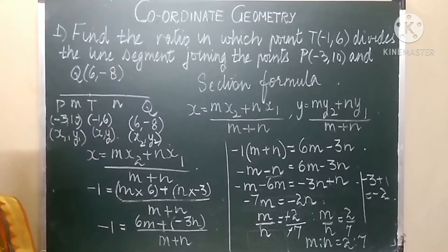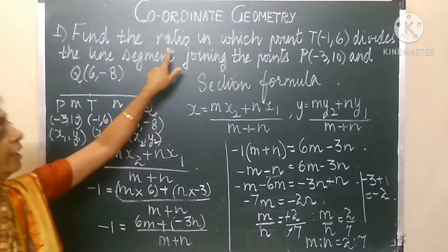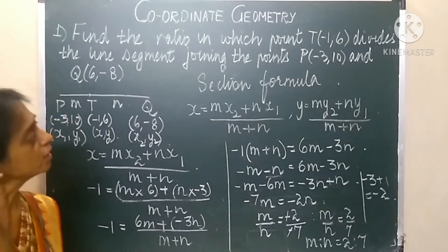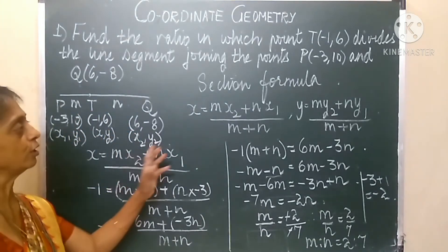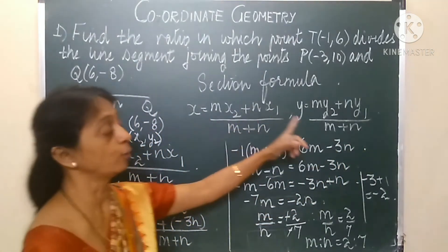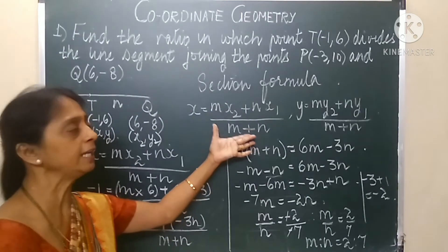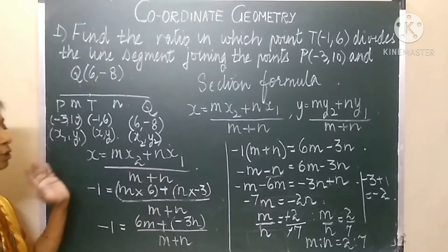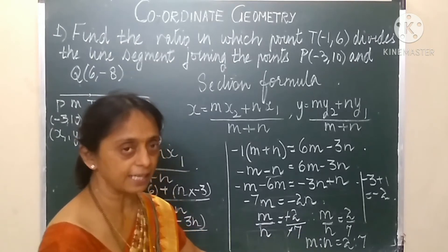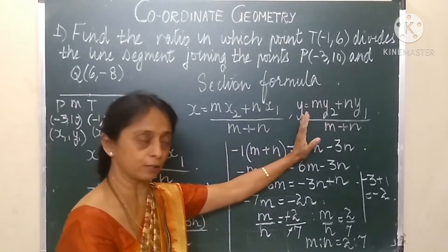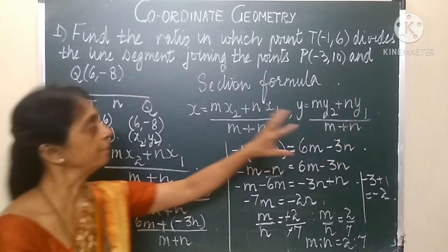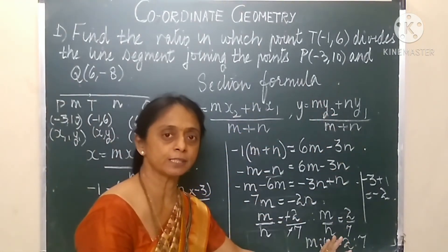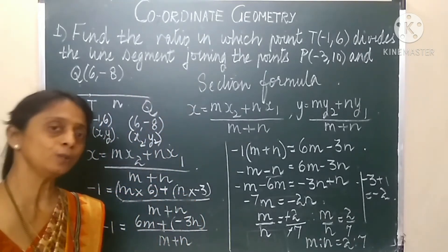So this is what they had asked us to calculate — find the ratio, which is given as m is to n. We have calculated and reached the answer, which is equal to 2 is to 7. We saw that we used the section formula, but we only needed to use one formula from the section formula, that is x = (mx2 + nx1) / (m + n). Even if we had used the other formula, y = (my2 + ny1) / (m + n), by substituting the given values, we would have also reached the same value: m is to n is equal to 2 is to 7.